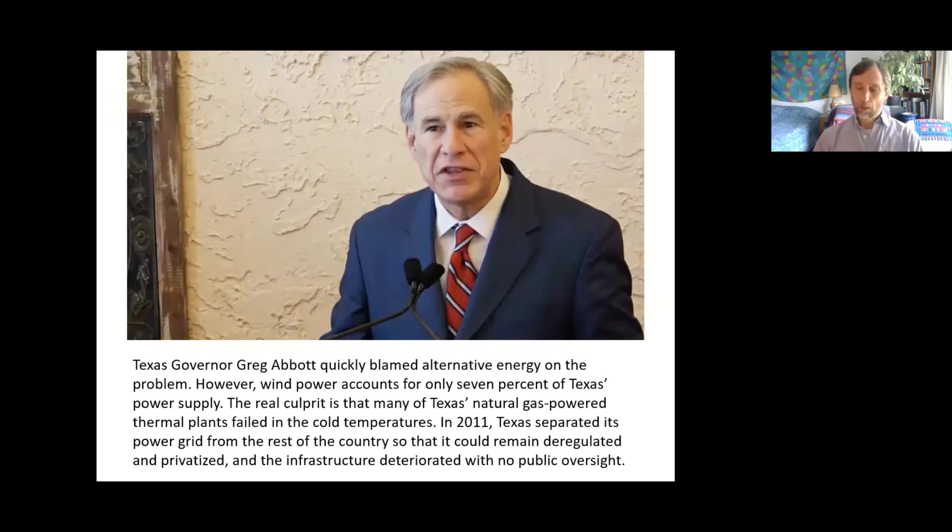When essential services are privatized, there's no guarantee that the people running them will look out for the greater good. Their essential motivation is going to be to make a profit for their shareholders, and there's nothing wrong with making a profit, but we also have to remember what's called the second bottom line, which is the social good. Many people are also saying we need really a third bottom line, which is environmental sustainability. Those three ethics in business need to be integrated - profit is one thing, a reasonable level of profit, but there also has to be equal emphasis on the social good and taking care of people that company is serving, and also environmental sustainability. The Texan oil companies did not want to submit to federal oversight, and so they separated their power grid from the rest of the country, and the infrastructure deteriorated without that public oversight.